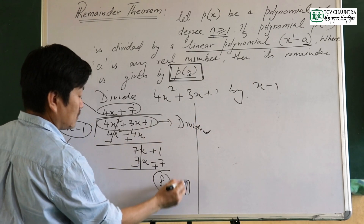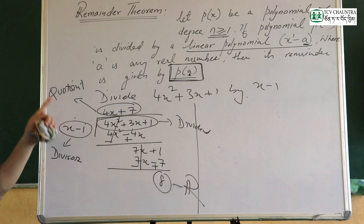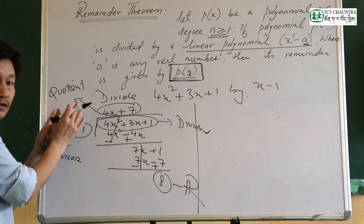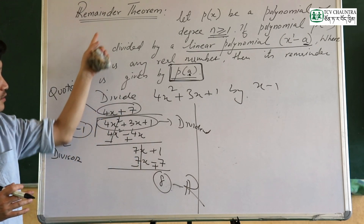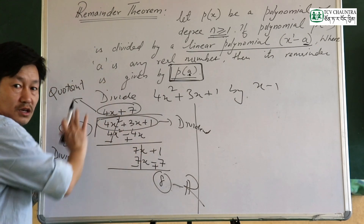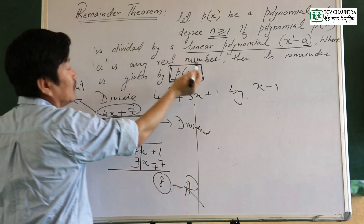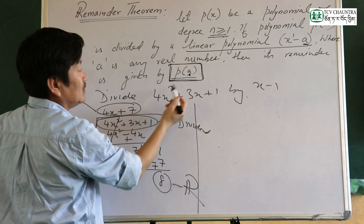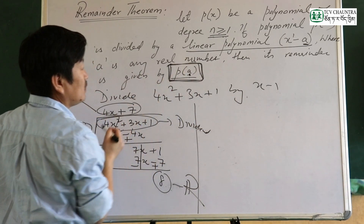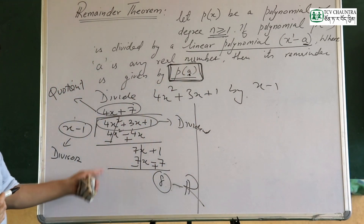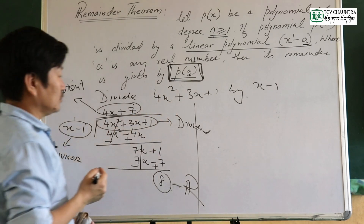Then we call the remainder r. The remainder is given by the long division process, and by the remainder theorem, the remainder is given by p of a.